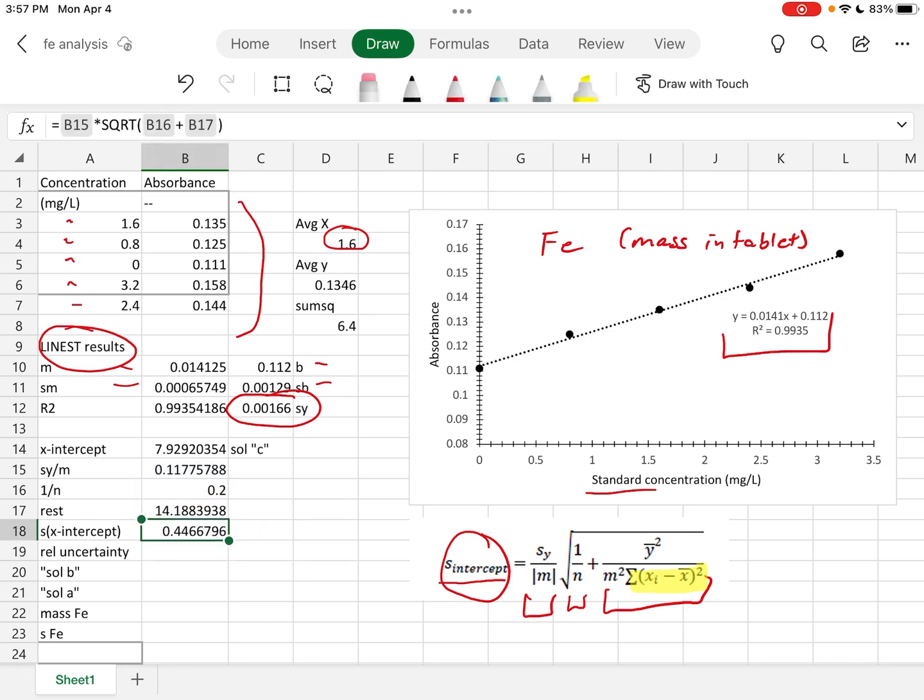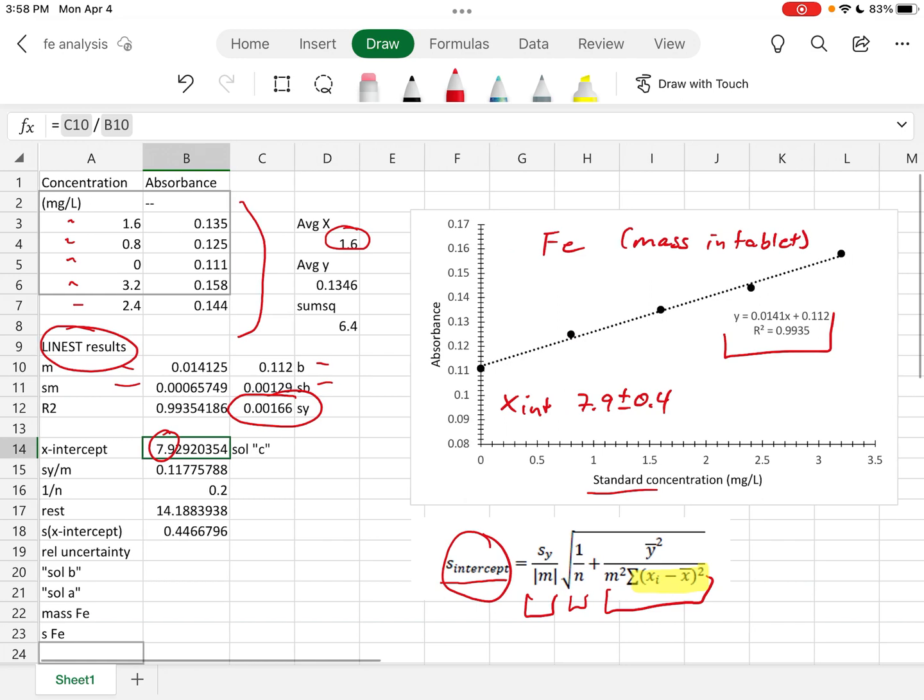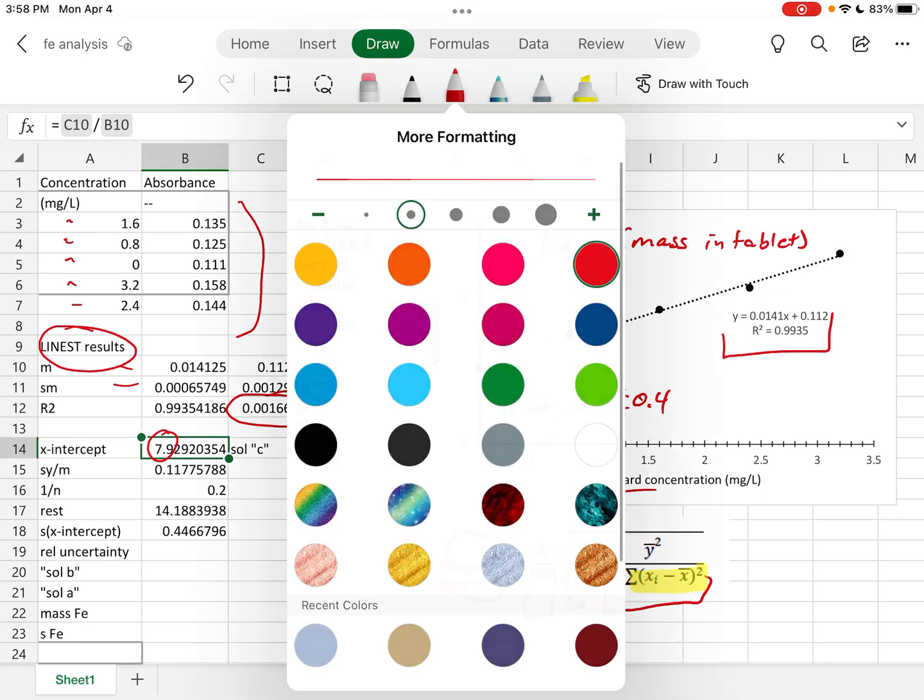And we see that this number is small relative to the x-intercept. So I can use a gut feeling approach to see if my number is right by looking at what this actually means. It means that the x-intercept is 7.9 plus or minus 0.4. We've got the 7.9 right there.